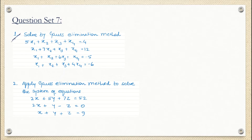We will be focusing on the first question. Here we can see that four equations are given and four unknowns are there: X1, X2, X3, X4. These are the linear equations.